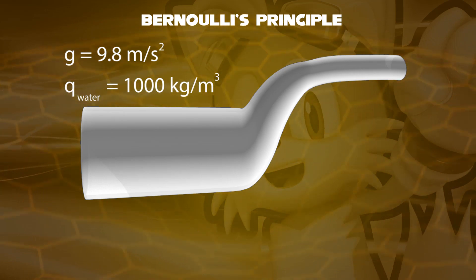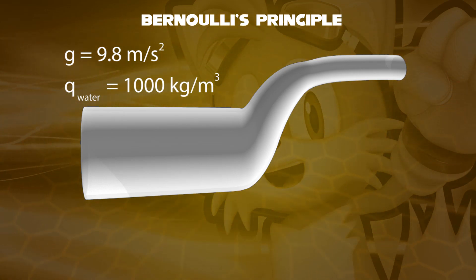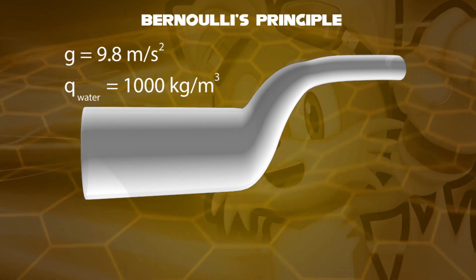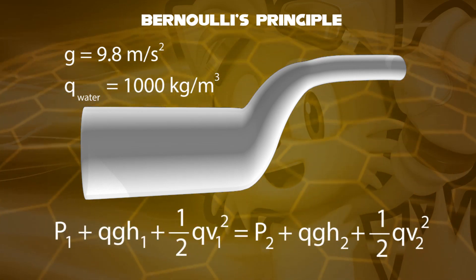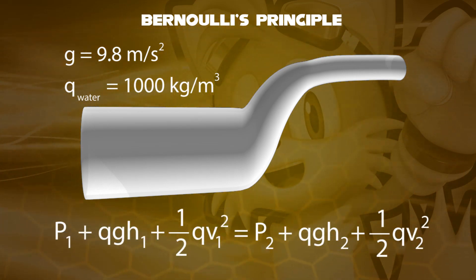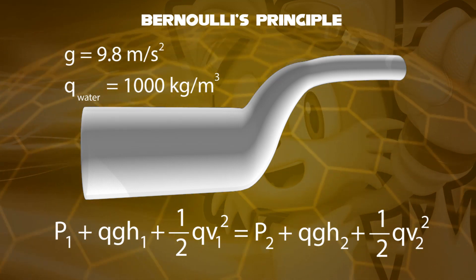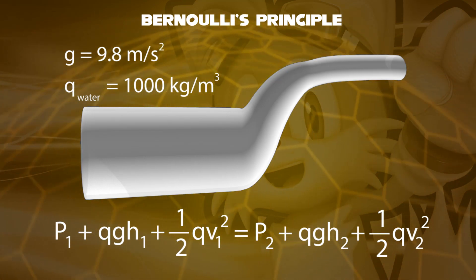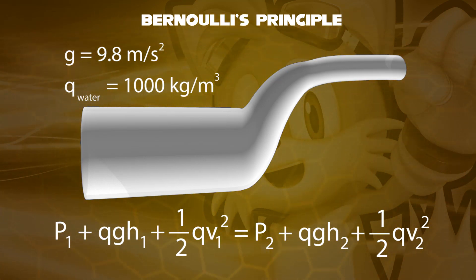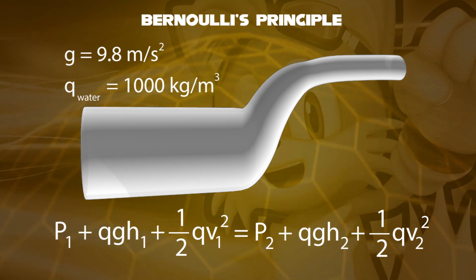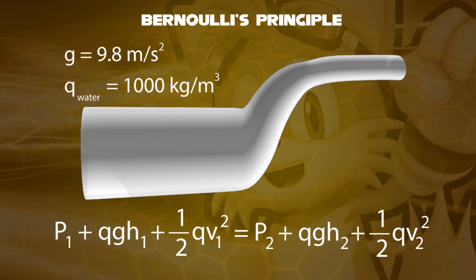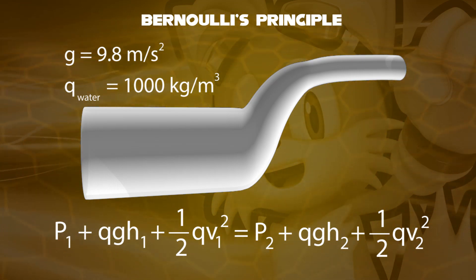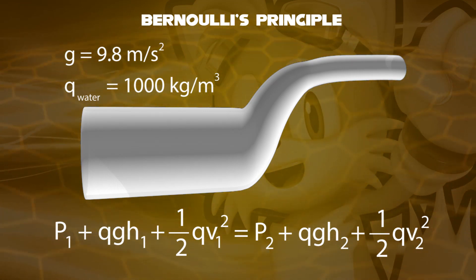And Q, be the density of a substance. Its equation can be written as: P1 plus QGH1 plus half times QV1 squared, equals P2 plus QGH2 plus half times QV2 squared.